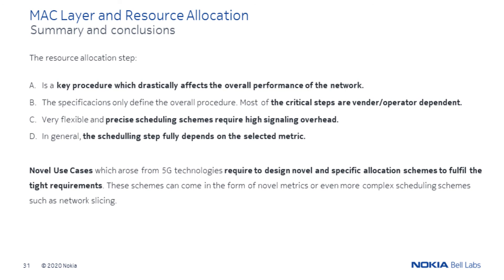After going over the basics of MAC layer and resource allocation steps, we can conclude that these steps drastically affect the overall performance of the network. The specifications only define the overall procedure, with most of the critical steps being vendor and operator dependent. We also highlighted how scheduling flexibility, precision, and optimization increases the overall signaling overhead. Finally, we highlighted the importance of adequate metric selection. It is important to notice that novel use cases require designing novel and specific allocation schemes to fulfill tight requirements, such as new metrics or even more complex schemes such as network slicing.